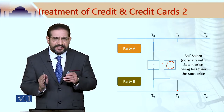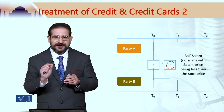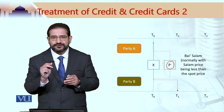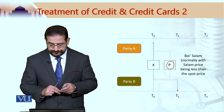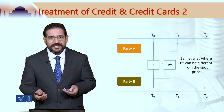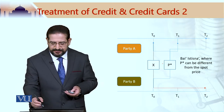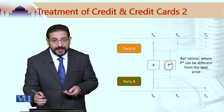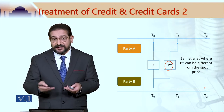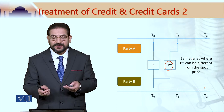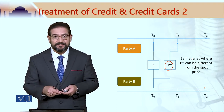I am referring to these examples because there is an implicit reference to credit and its treatment in these sales. In case of istisna, the price is paid progressively and this price P-star can actually be different — it can be higher or lower than the prevailing market price of the item if it happens to be available in the market.